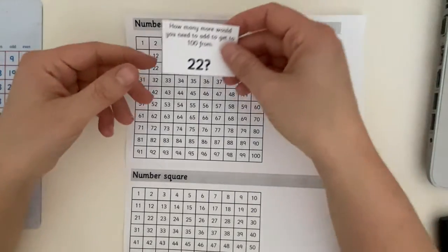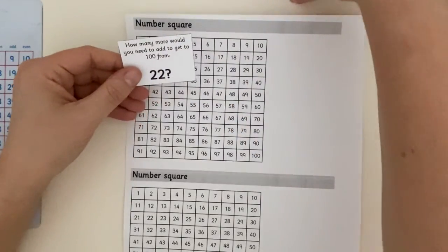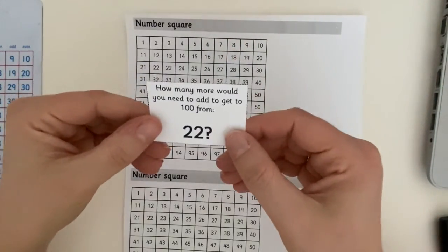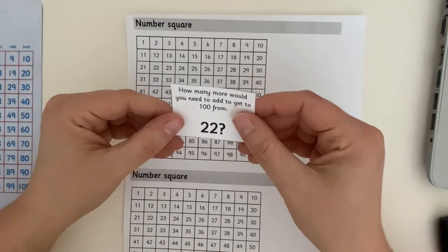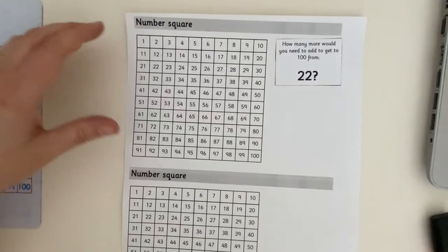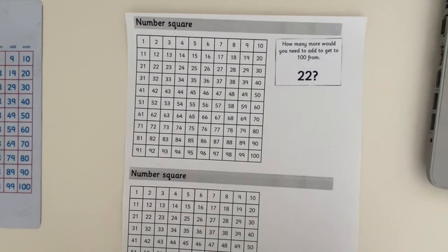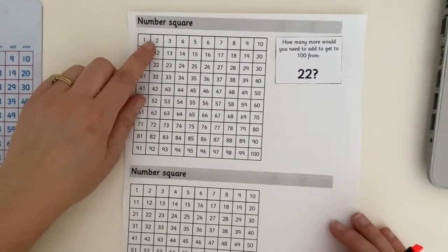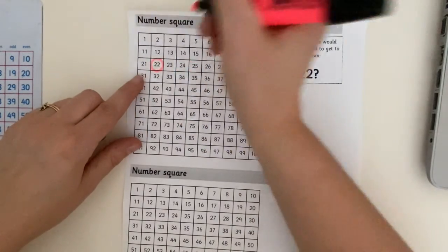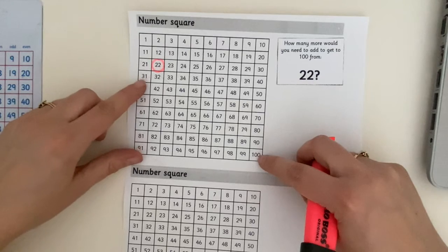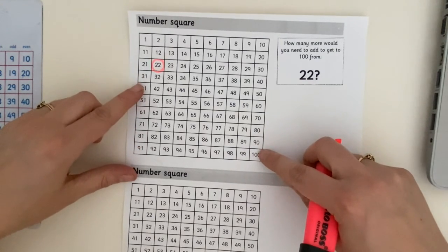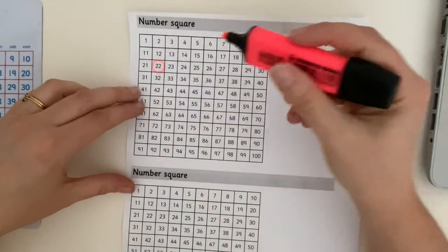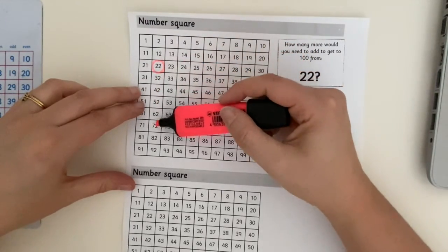Now what you can do is you can either print out the worksheet, which has got the number cards on, or you can just have a look at them on the screen and then choose a number. Okay. We're going to start off with this one first. 22. How many more would you need to add to get to 100 from 22? I'm going to pop that there. The first thing I'm going to do is I'm going to find 22 on my number square. Now I know it's going to be quite near the top and it ends in a two. So 22, I'm going to do a big circle around that one. Now I know that I need to get to 100, which is quite a long way away for number 22. I know that it's going to be going down here in tens.